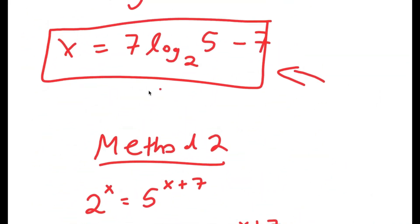So x equals 7 times log base 2 of 5 minus 7 is the final answer.